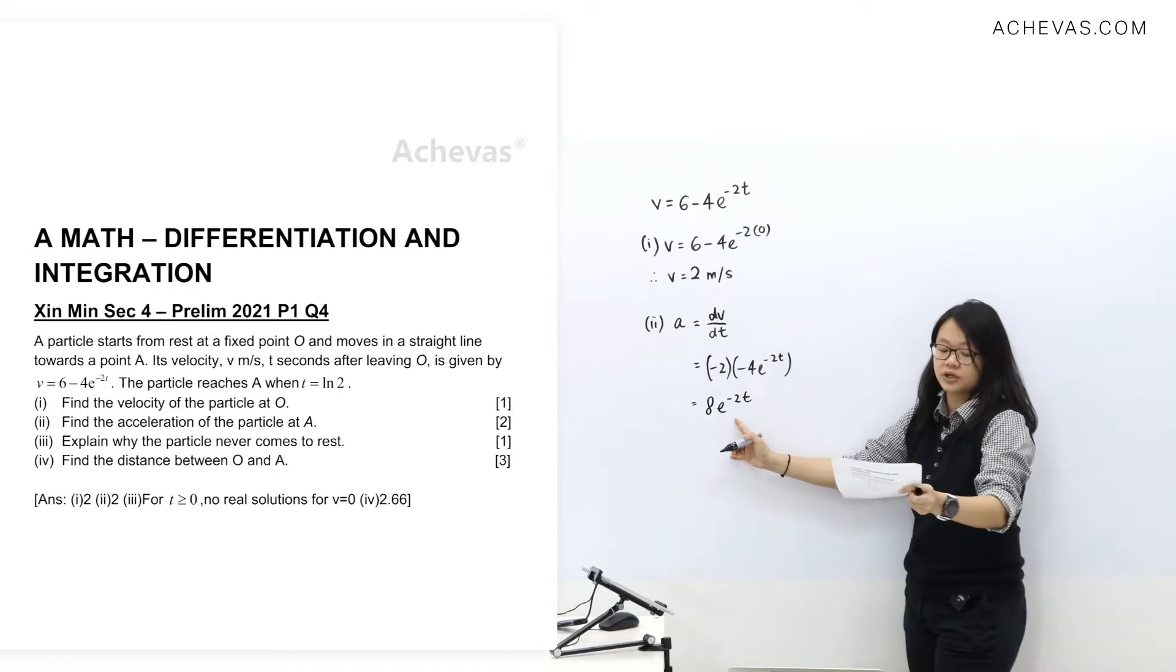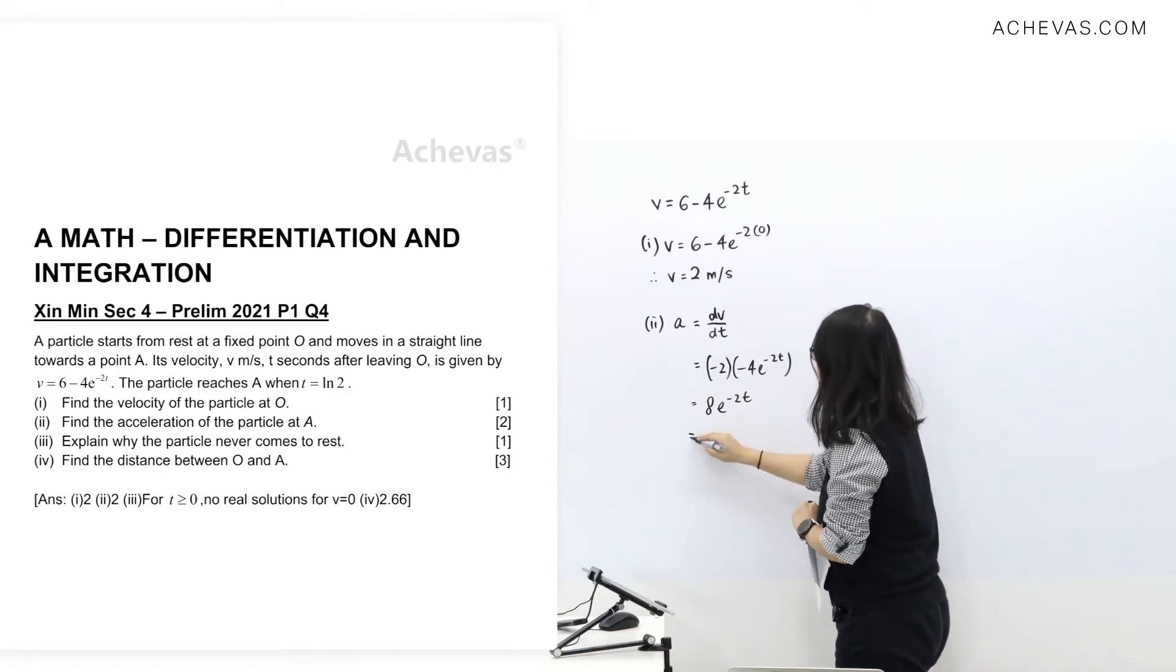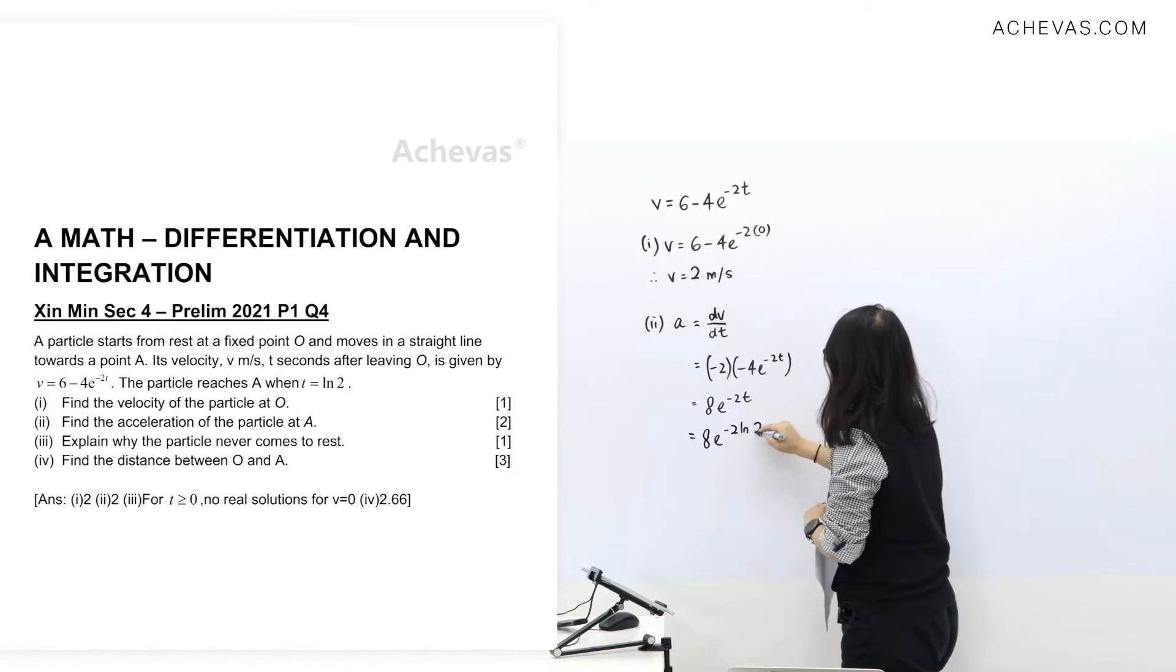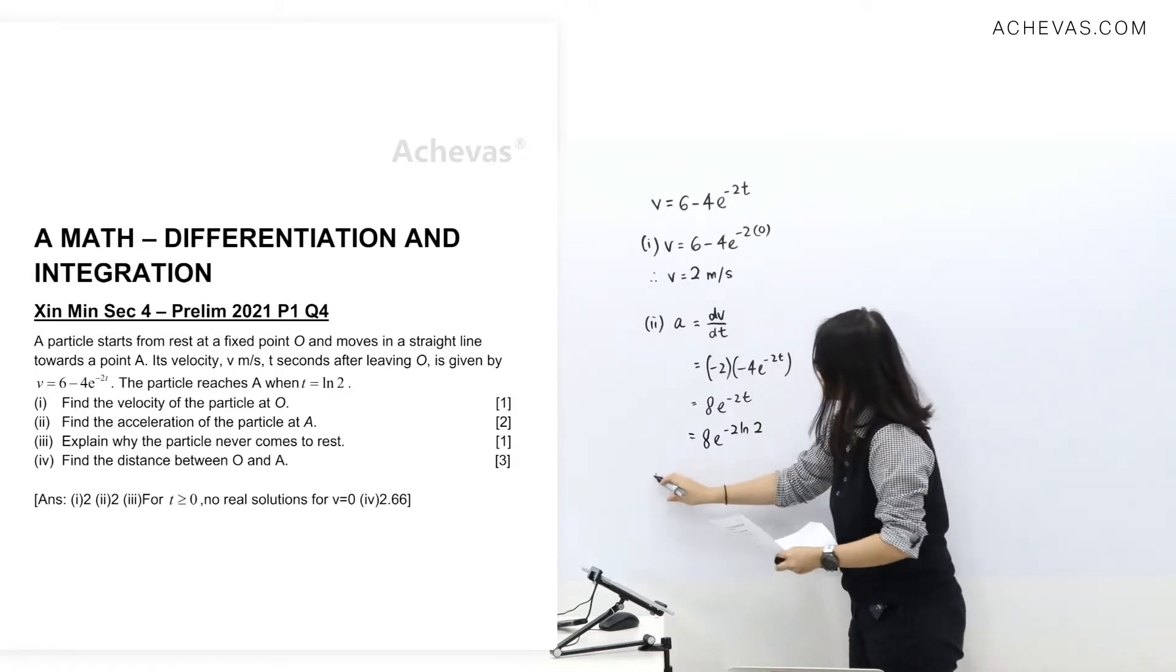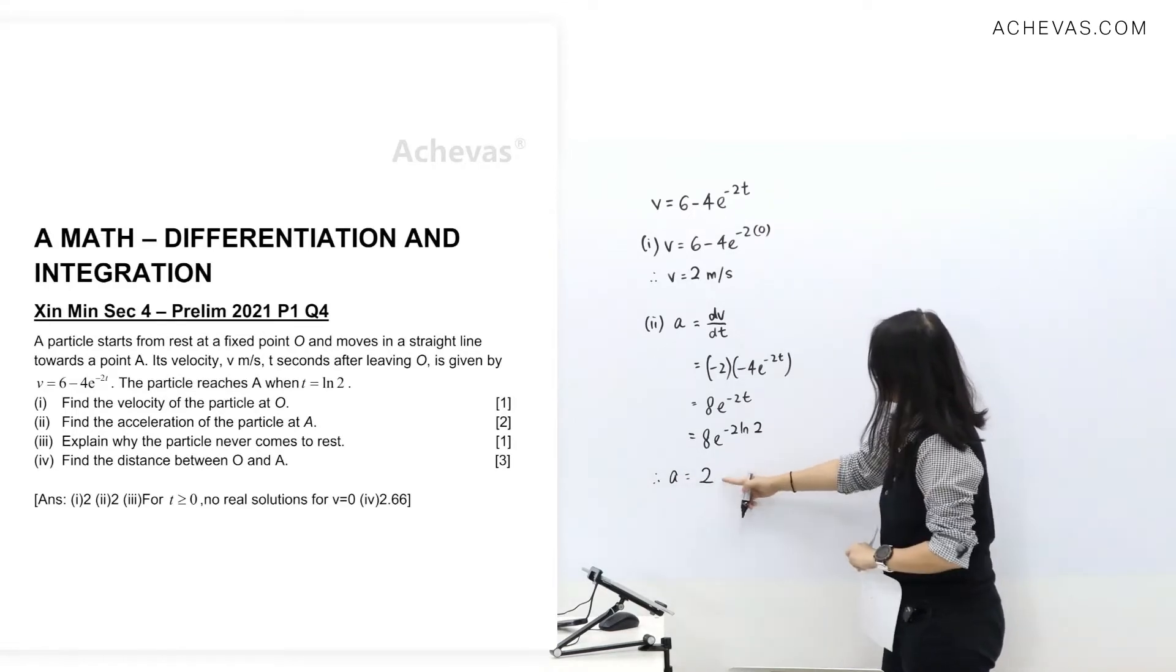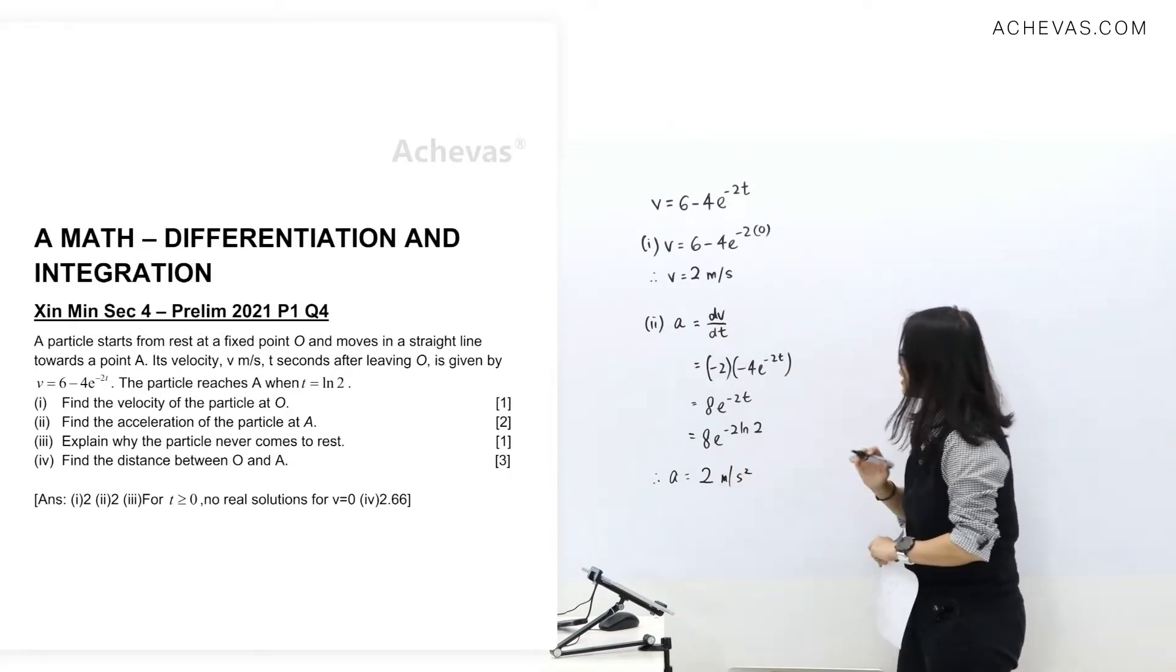That's expression for acceleration, so they want it at A. A is given to you, ln 2. Let's just do it. So from here, you will be getting acceleration equals to 2. Coincidentally, it's the same.